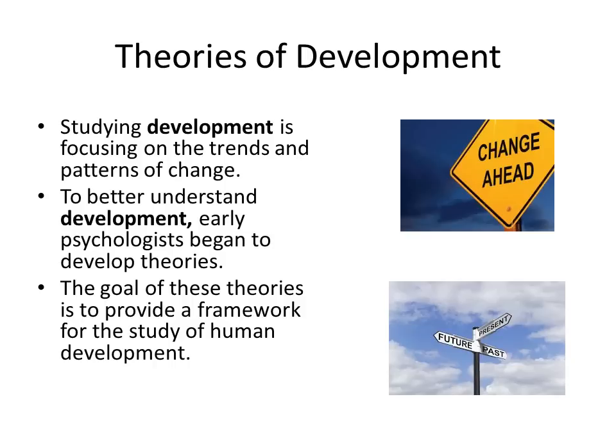Studying development is focusing on the trends and patterns of change. By understanding when we change, how we change, and why we change, we have a better understanding of how we all develop as humans. To better understand development, early psychologists began to develop theories. When you put out a theory in a peer-reviewed journal, it's available for other people to comment. The goal of these theories is to provide a framework for the study of human development, giving us an organized way of studying lifespan psychology.